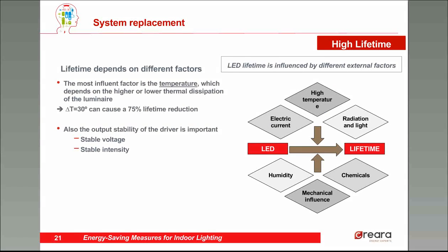Lifespan is determined by the probability of a catastrophic failure and the luminous flux maintenance, because after 60,000 hours the lamp doesn't stop working but the flux weakens. Lifetime depends on different factors — the most influential factor is the temperature, which is the most influential factor in efficiency too. An increase of 30 degrees in temperature can cause a 75% lifetime reduction. Also important is the output stability of the driver — we need a stable voltage and stable intensity. Other factors include radiation, humidity, mechanical influence, and chemicals.